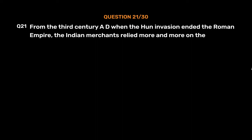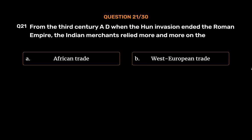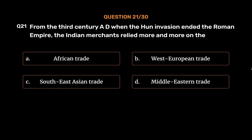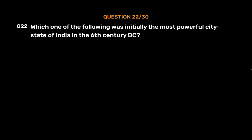Question number twenty-one: From the third century AD, when the Hun invasion ended the Roman Empire, Indian merchants relied more and more on — Option A: African trade, Option B: West European trade, Option C: South East Asian trade, Option D: Middle Eastern trade. The correct answer is Option C, South East Asian trade. After the third century AD, when the Roman Empire came to an end, Indian merchants had begun to rely more heavily on the South East Asian trade.